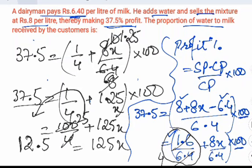So x becomes 12.5 by 125. So that is 1 by 10. So x is 1 by 10.